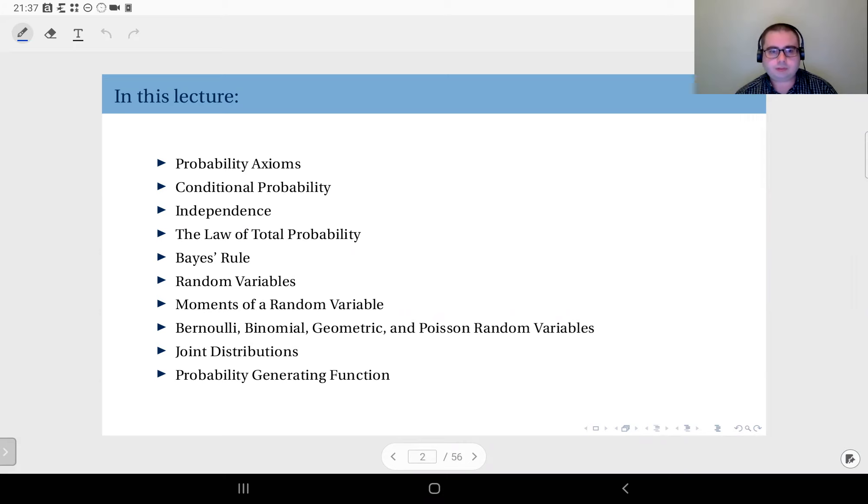When dealing with conditional probabilities, we will define what a random variable is, define the moments of random variables, and investigate some widely used discrete random variables. Finally, we will talk about joint distributions when we have more than one random variable and probability generating functions. Everything we focus on here is going to be discrete probability, but there is also the continuous counterpart which we will not really go into.